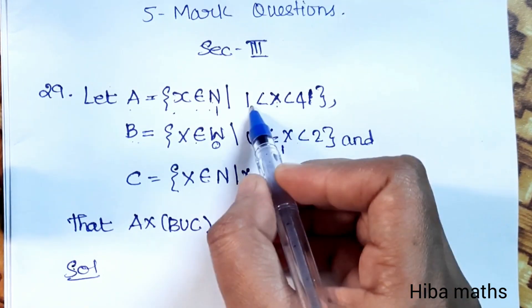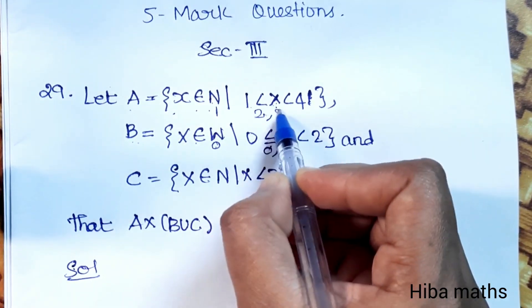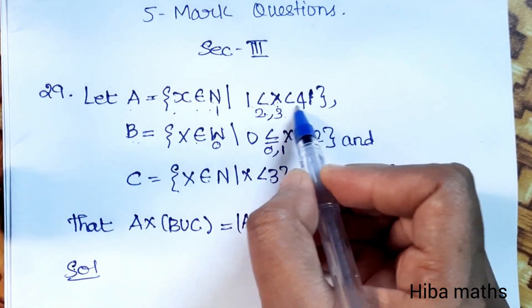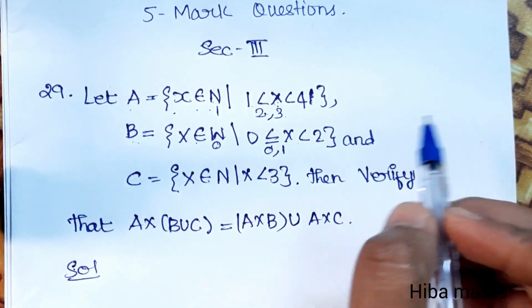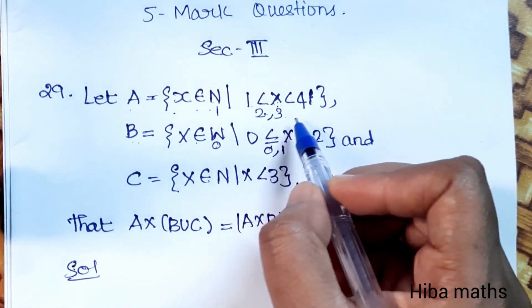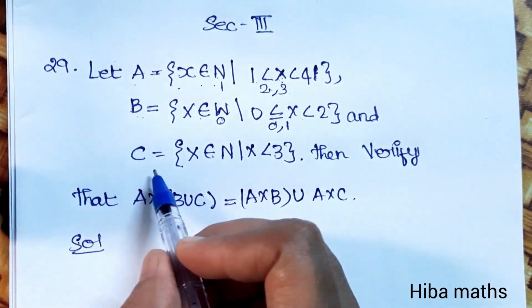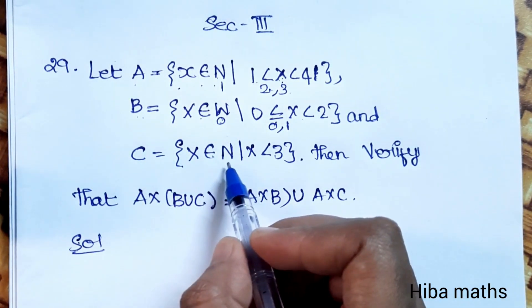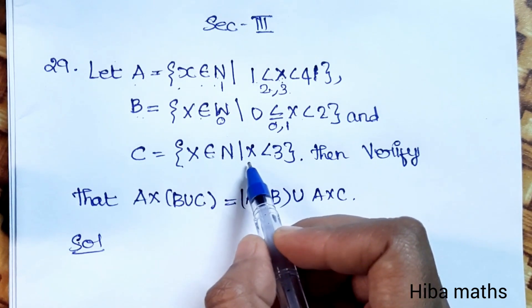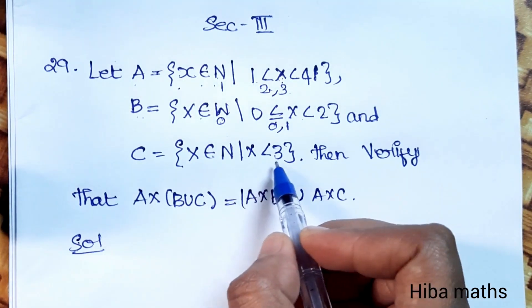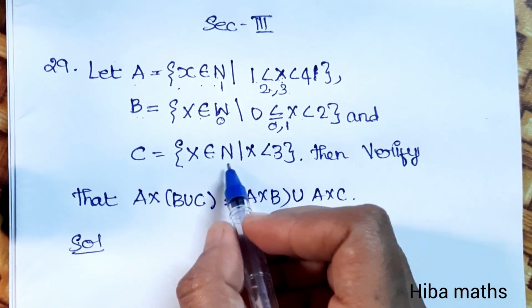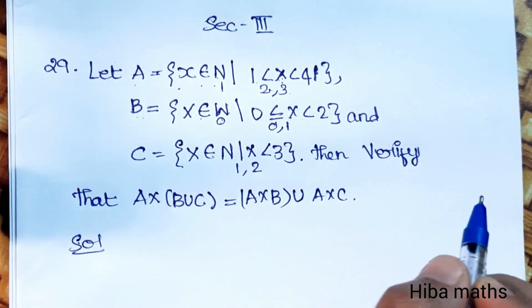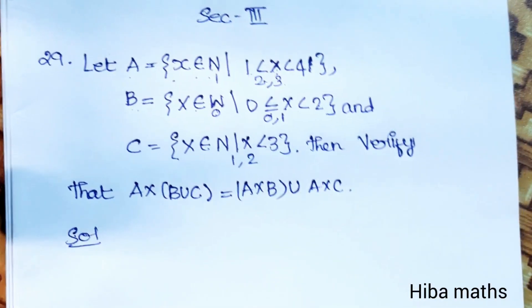For set A: x is greater than 1 and less than 4, so x is 2 and 3. Then add C: C equals x, where x is an element of natural numbers and x is less than 3. Natural numbers less than 3 are 1 and 2. Therefore this is the solution.